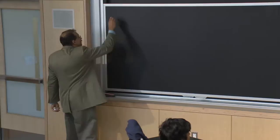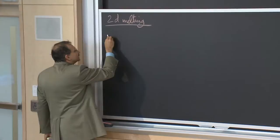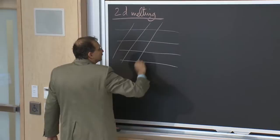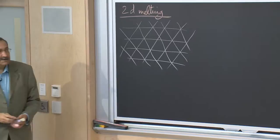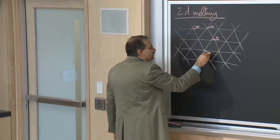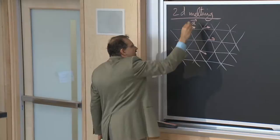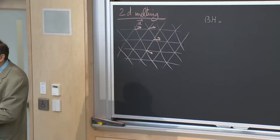Let's start. So we were talking about melting in two dimensions, and the picture that we had was something like a triangular lattice, which at zero temperature has particles sitting at precise sites on this triangular lattice. But then at finite temperature, the particles will start to deform. And the deformations were indicated by a vector u.